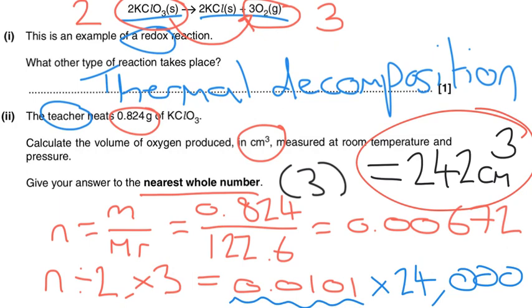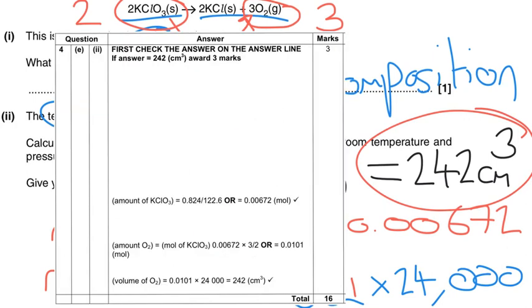Now the main reason I want you to do that, more than anything else in the world, is because if we just have a quick look at the mark scheme, there we go, and just to remind you this was taken from the question itself, what we can actually see is just here, first check on the answer line, if answer equals 242 centimetres cubed, award three marks.